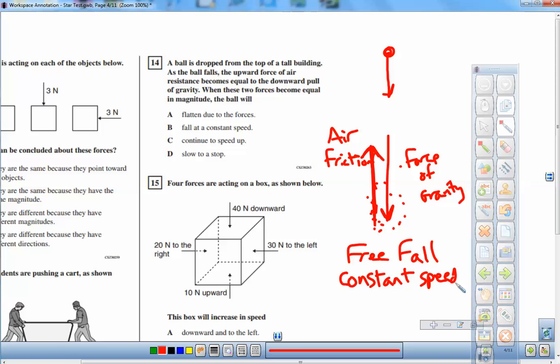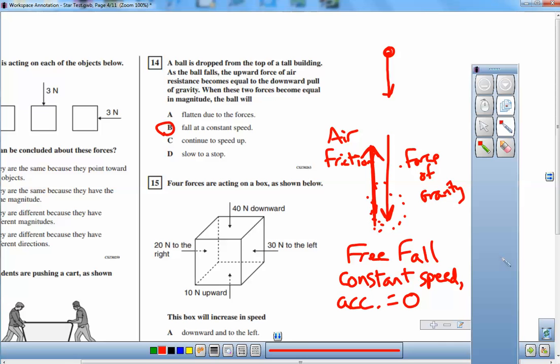So, constant speed, acceleration equals zero. So, it's not going to flatten. It falls at a constant speed. It does not continue to speed up because it does have the air friction, air resistance. And it certainly doesn't slow to a stop. It's still falling in the gravity field.